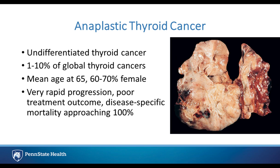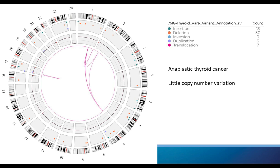The next cancer is anaplastic thyroid cancer — undifferentiated thyroid cancer. It accounts for a small proportion of thyroid cancers globally — around 1% to up to 10%. Patients tend to be older, around 65, and predominantly female. It has very rapid progression, poor treatment outcomes, and mortality basically approaches 100%. Patients fare quite poorly and their breathing is disrupted quite early in the disease state. I'm interested in taking a look at these highly aggressive cancers using genome imaging, since it hasn't been applied before.